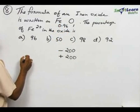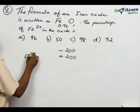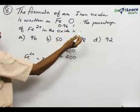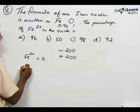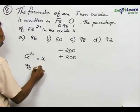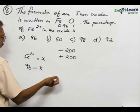For example, if you assume that Fe 2+ has x atoms, then since we assume 100, so 96 minus x will give Fe 3+.